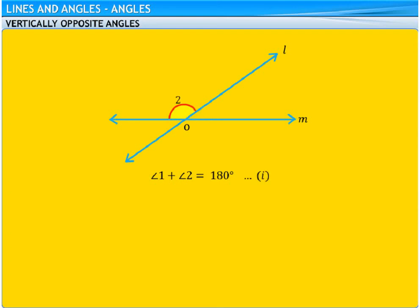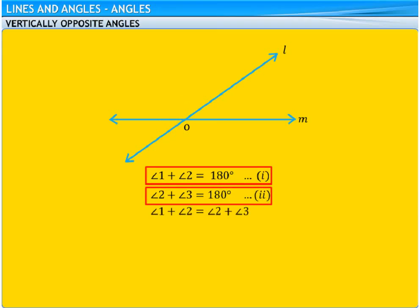Similarly, angles 2 and 3 form a linear pair. So, sum of angles 2 and 3 equals 180 degrees. Let's mark this result as 2. So, from results 1 and 2, we get angle 1 plus angle 2 equal to angle 2 plus angle 3. On cancelling angle 2, which is the common angle on both the sides, we get angle 1 equal to angle 3.